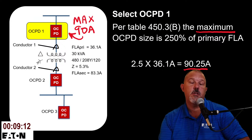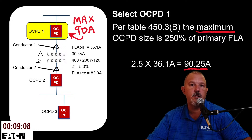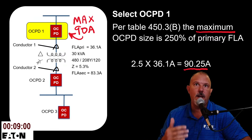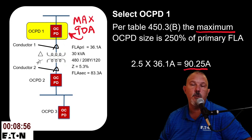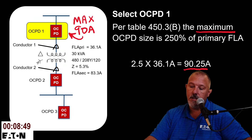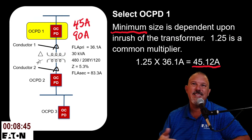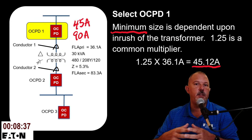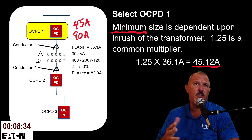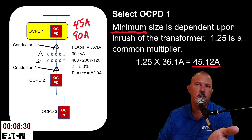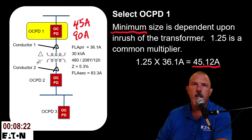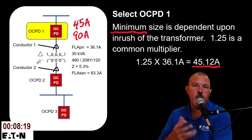Doing the math: 2.5 times 36.1 amps equals 90.25 amps, so the maximum primary OCPD is 90 amps — I cannot go higher per the language in 450.3(B). The minimum will be driven by inrush current. Typically we don't jump straight to 250%; I'd normally pick around 125%, which would be a 45-amp device. I'll show plots for both the 45-amp and 90-amp options, both being standard ampere ratings from Table 240.6.